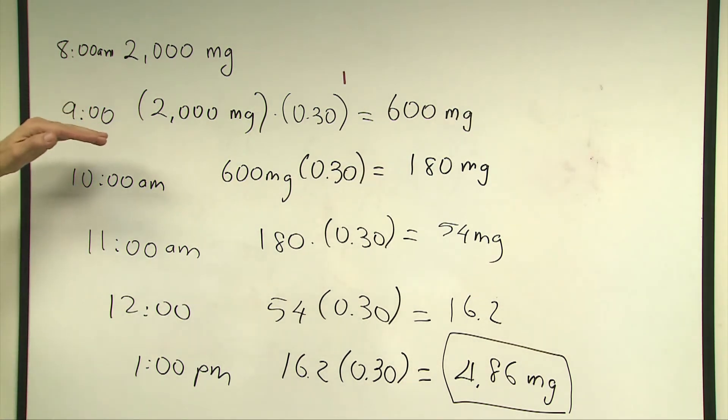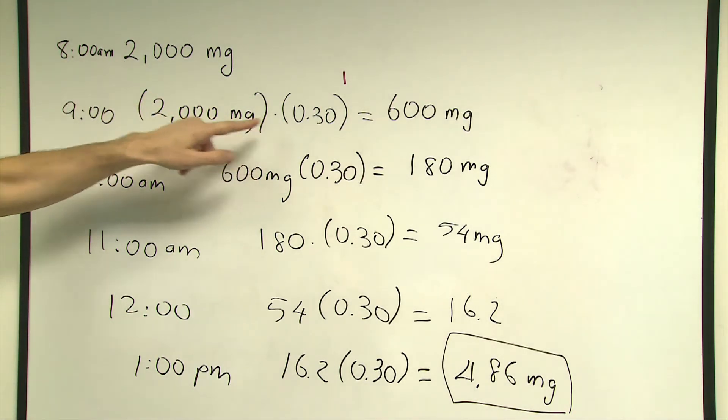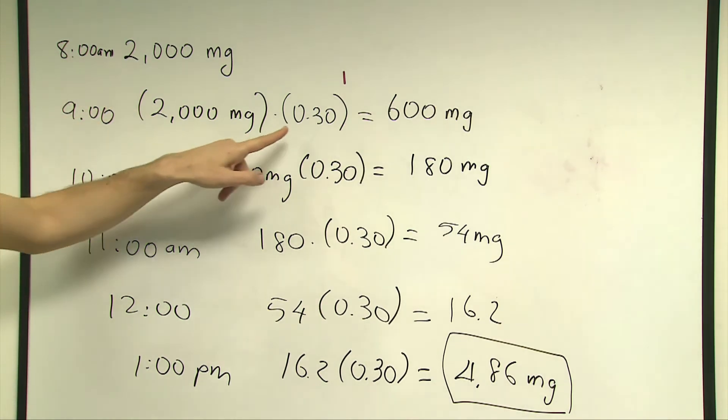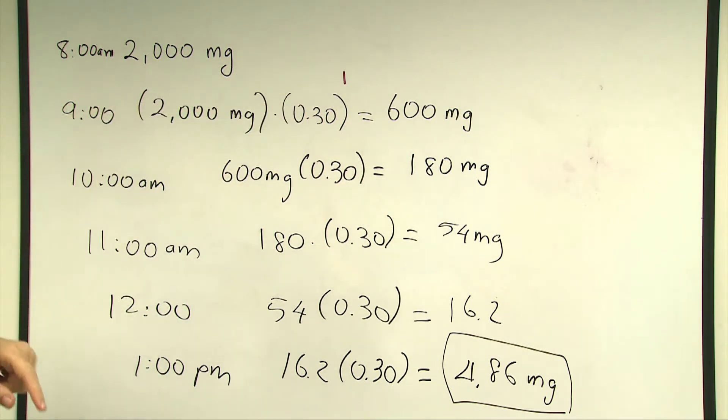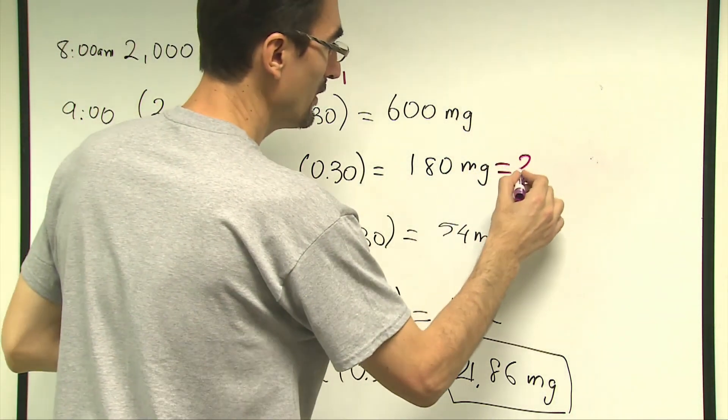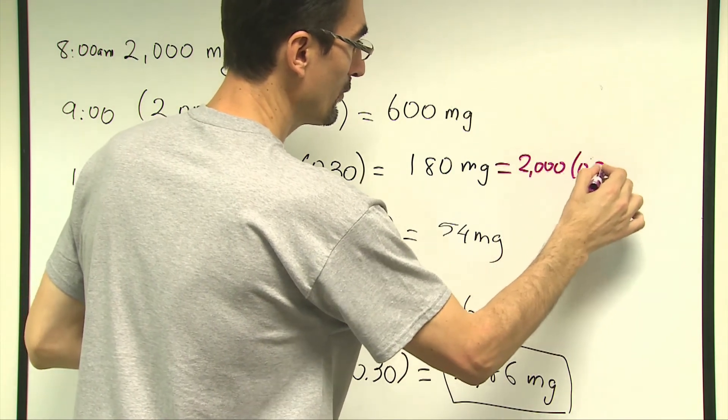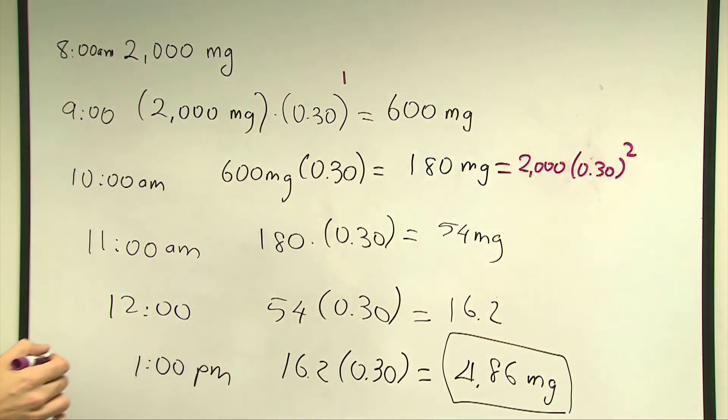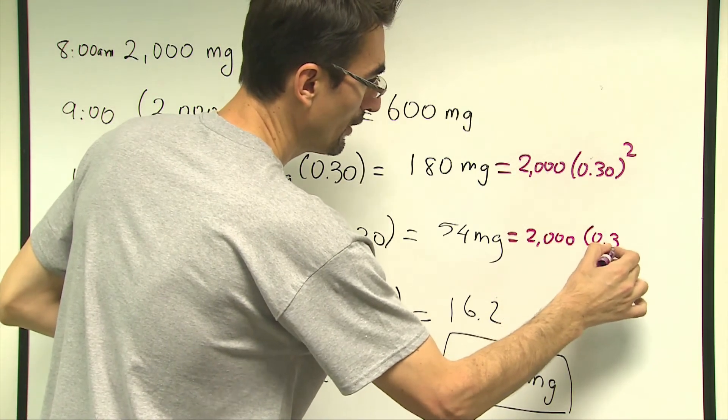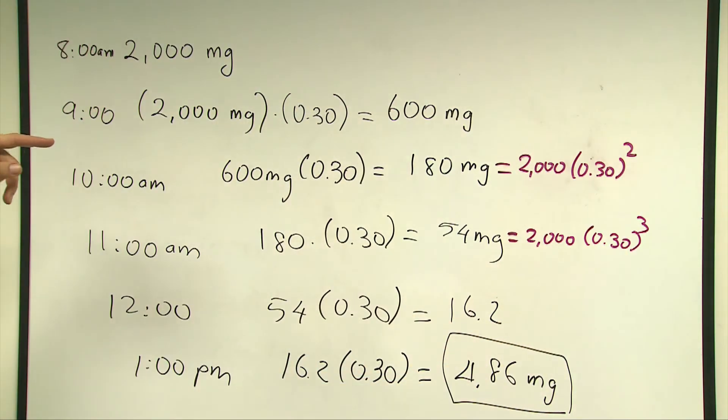Now, as you notice, at every step, I've been multiplying my initial amount of medicine by 0.30. In other words, 1 hour from 8 a.m., I multiplied that by 0.30 raised to the power 1. At 10 a.m., another multiplication by 0.30, I can re-express this as my initial amount multiplied by 0.30 raised to the second power.